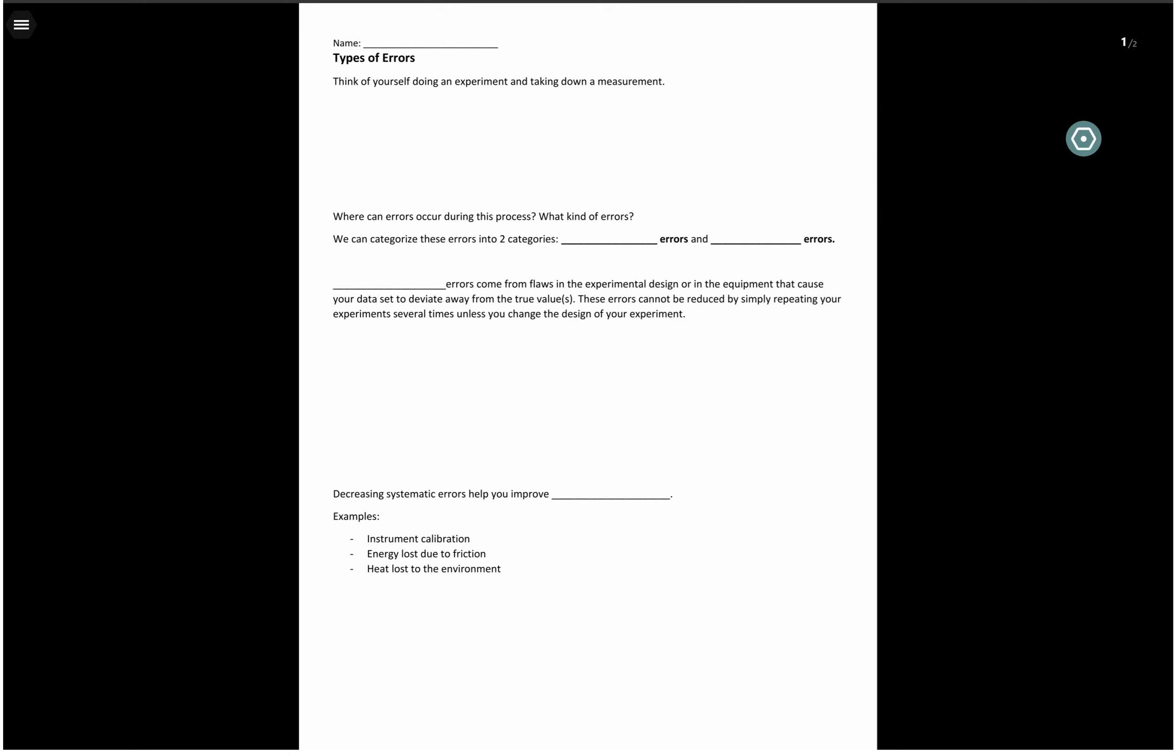We talked about uncertainties. We talked about errors in our experiment. In this lesson, we will look at different types of errors. How do we classify these errors?